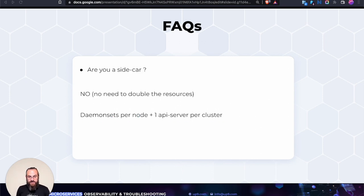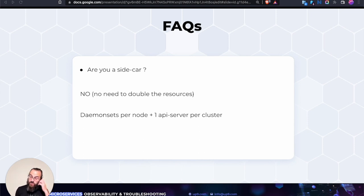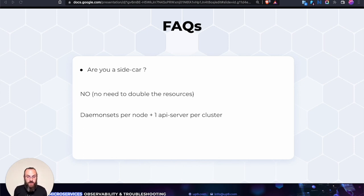Are you running as a sidecar? We actually started as a sidecar, but the problem is that you're doubling the resources — it was super hard. What we converted to is a daemon set per node with a pod that obeys the regular expression or namespace, and one more pod for the web server that shows all the traffic. It's very lean, and with Control-C you just clear everything.